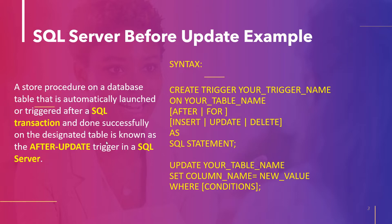First, we have to write CREATE TRIGGER followed by your trigger name, then ON and your table name — whichever table you are working on. After that we write the trigger type: AFTER, FOR, or INSTEAD OF. Then we write the DML statement. Inside the AS block we write the statement that the trigger will execute, which can be an UPDATE, DELETE, or INSERT statement depending on the user's requirement.